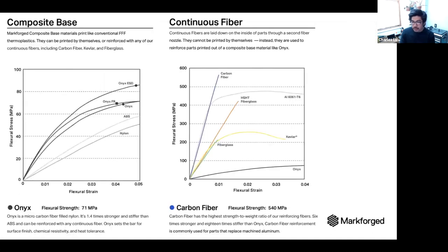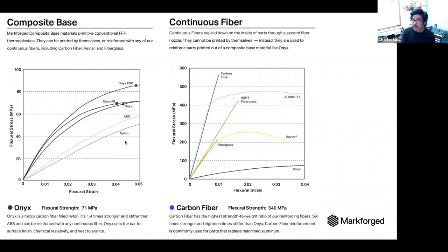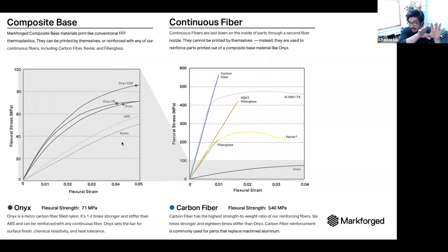What does this actually translate to in terms of strength? You can see that the Onyx material and carbon fillers add a lot of stiffness and increase strength. But I want to note that the scale on the left, comparing short-fiber materials, comes down significantly compared to the scale on the right for continuous fibers. Continuous fibers represent an order of magnitude difference in strength and stiffness. That's where we'll get into the bulk of the material next.